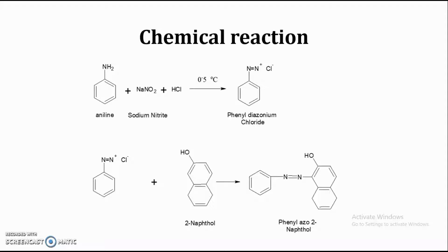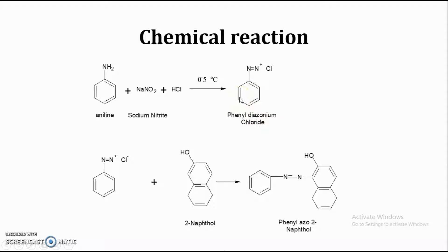In diazotization reaction, sodium nitrite and hydrochloric acid or any other mineral acid can be used, which leads into the formation of nitrous acid (HNO2). This nitrous acid is prepared in situ — that is, we are preparing it within the conical flask rather than adding it directly, which is why this reaction is also known as in situ formation. Nitrous acid reacts with the amino functional group of aniline at 0 to 5 degrees Celsius, leading to the formation of phenyl diazonium chloride.